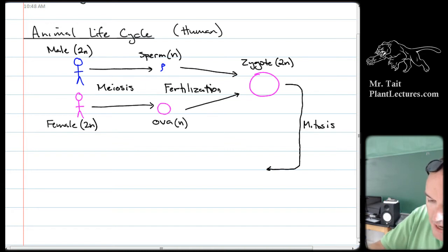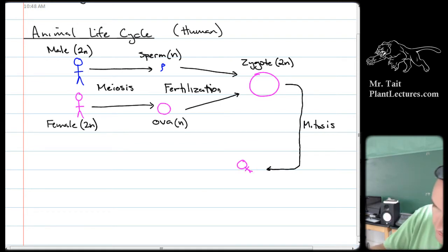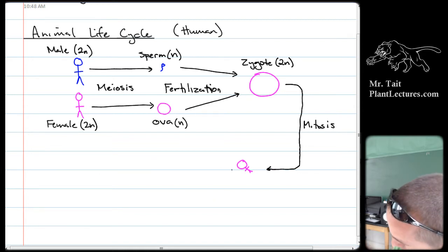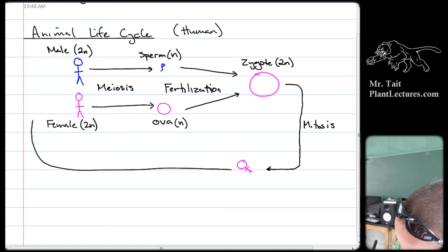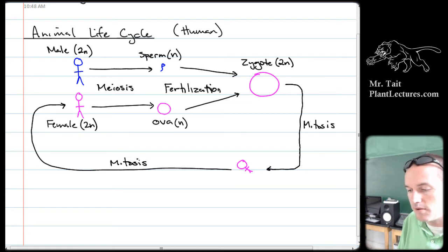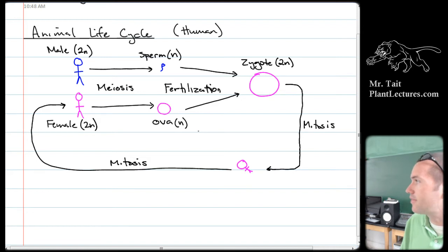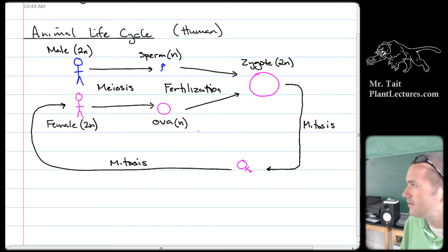The zygote goes through mitosis a bunch and becomes a baby. The baby goes through mitosis a bunch and becomes an adult. That adult will have cells that undergo meiosis to become eggs and sperm, and so on. This is the animal life cycle — the human life cycle we're all familiar with.